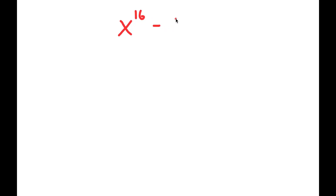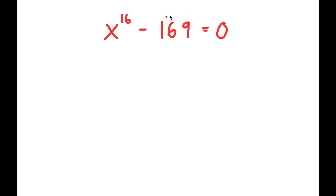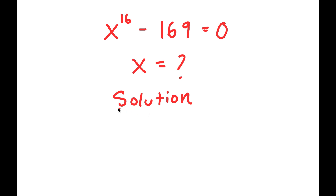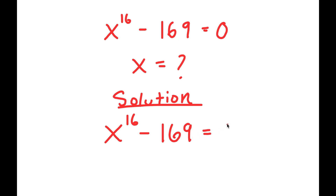In this video, I'm going to be solving the equation x to the power of 16 minus 169 is equal to 0. My only variable in this equation is x, so that's obviously what I'm going to be solving for. I'm going to first rewrite my equation down here so I have a little more solving space: x to the power of 16 minus 169 is equal to 0.